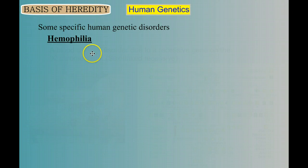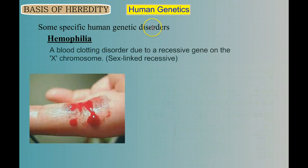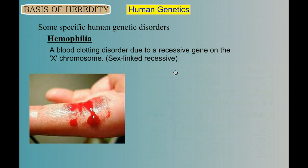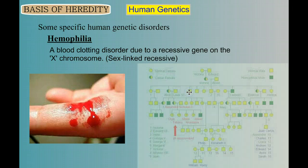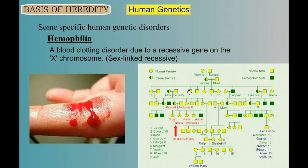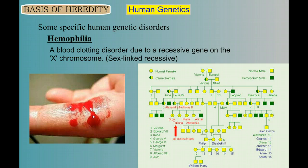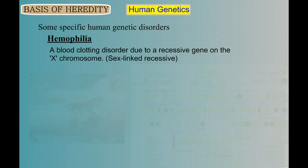Hemophilia is a blood clotting disorder. It happens to be due to a recessive gene on the X chromosome — it's a sex-linked recessive trait. Here's our pedigree from the first slide in this video showing the movement of hemophilia through the royal families of Europe.